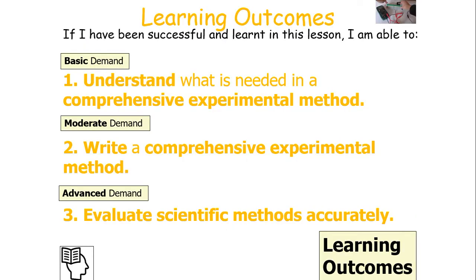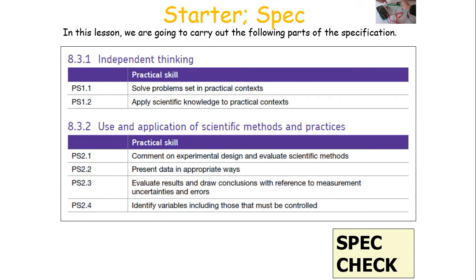In today's lesson, if we're being successful and we've learned, we can understand what is needed in a comprehensive experimental method, we can write a comprehensive experimental method, and we can evaluate scientific methods accurately, which forms the following part of the AQA A-level physics specification.